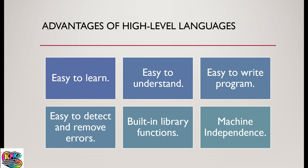When we say high-level languages are machine independent, we mean that high-level languages can run on different platforms. For example, Python can run on Mac OS, the same Python can run on Windows OS, and even on Android platforms you have Python interpreters working. So high-level languages can be said to be machine independent.